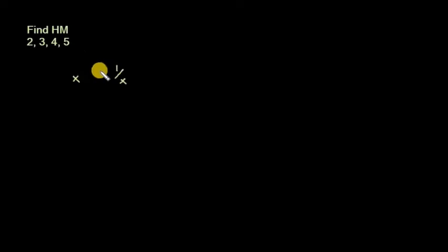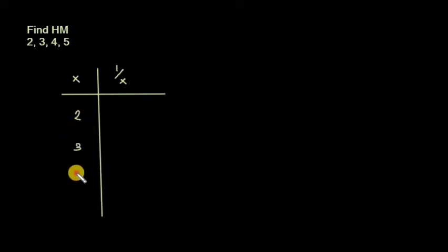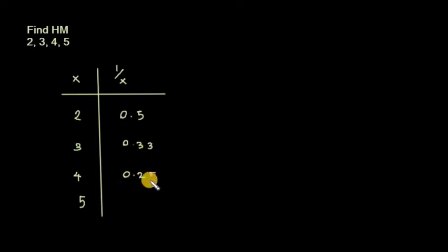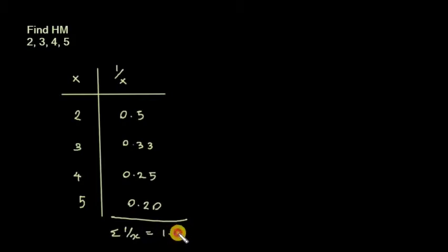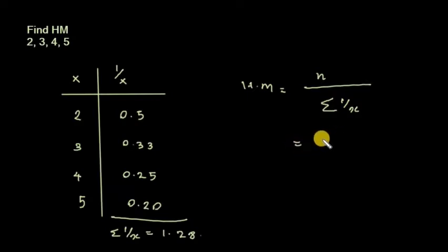Here is a problem. We form a table with x and 1/x columns. Given data: 2, 3, 4, 5. The values of 1/x are: 1/2 = 0.5, 1/3 = 0.33, 1/4 = 0.25, 1/5 = 0.20. So Σ(1/x) = 1.28. Harmonic mean = n / Σ(1/x) = 4 / 1.28, and the answer is 3.125.